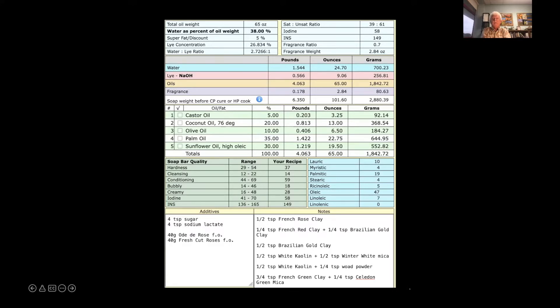On the bottom right there you can see the colors I'm using. For the darker clay soaps I've made in the past, I've tended to use about a teaspoon per pitcher of colorant, so I've gone to about half that this time. French rose clay makes a nice medium pink, mixing the French red and Brazilian gold clays gives a nice bright orange, the Brazilian gold itself is kind of a golden yellow, and then the white kaolin would be kind of grayish white by itself, so I added some winter white mica to it to brighten it up.